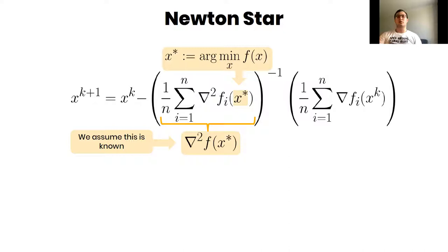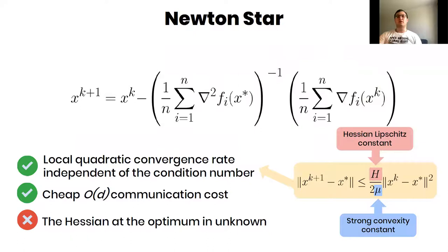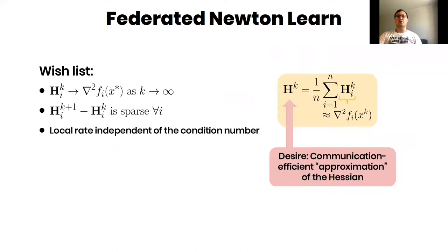It means that each node computes only local gradients. This method has local quadratic convergence rate independent of the condition number, cheap O(d) communication cost, but it cannot be implemented in practice since we do not know the Hessian at the optimum. That's why our desire is to learn the Hessian at the optimum iteratively and do it effectively in terms of communication complexity.